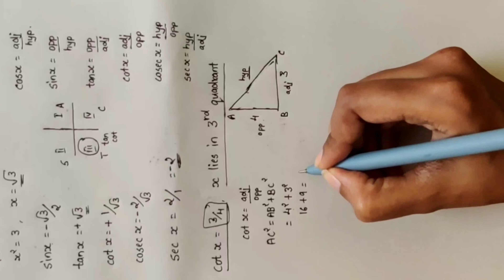In the triangle, this is adjacent (base), this is opposite, and this is hypotenuse. Since tan x = opposite divided by adjacent, opposite is 5 and adjacent is 12. Now find the hypotenuse using the Pythagorean theorem: AC² = AB² + BC².